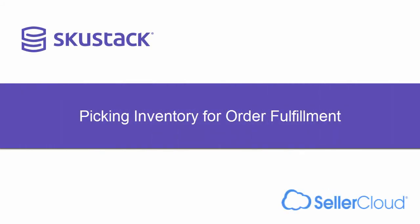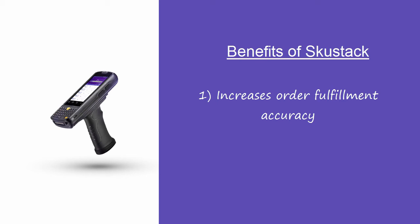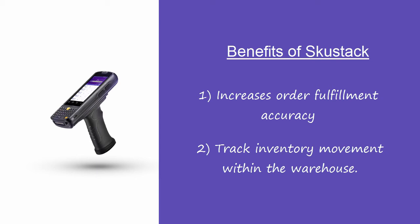In this video, we'll look at how to pick inventory for order fulfillment. Using SkewStack to pick orders boosts your picking accuracy, so that you'll pick the right items for the right orders. SkewStack also tracks your inventory in bins, so that you can know where things are in your warehouse.